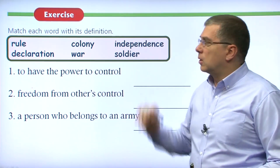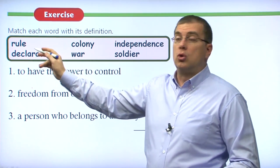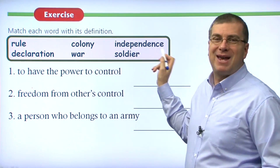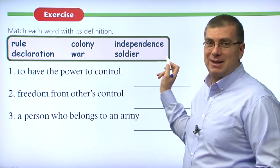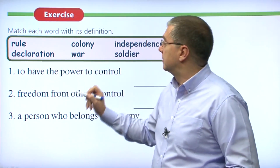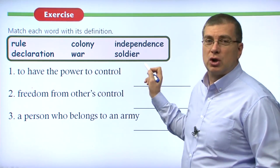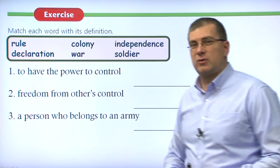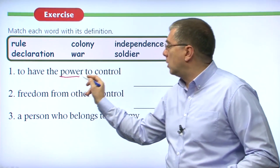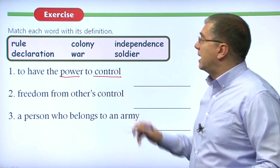Let's match the words with their definitions. Our words are: rule, colony, independence, declaration, war, and soldier. What are the definitions of these words? Number one — to have the power to control something. Somebody has the power to control something.